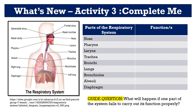Let's have Activity 3: Complete Me. In this activity, you should be able to jot down the functions of the parts of the respiratory system, starting with the nose, followed by the pharynx, larynx, trachea, bronchi, lungs, bronchus, alveoli, and the diaphragm. Don't forget to answer the guide question: what will happen if one part of the system fails to carry out its function properly? It's your job now — answer the activity.